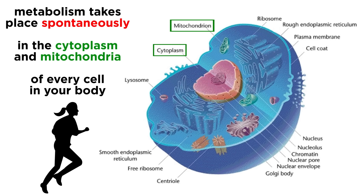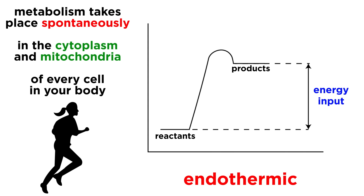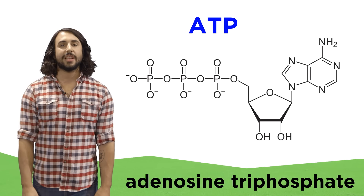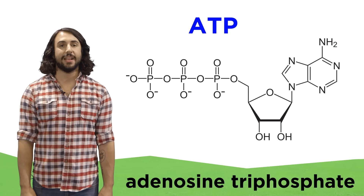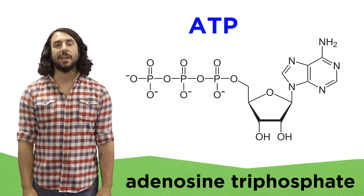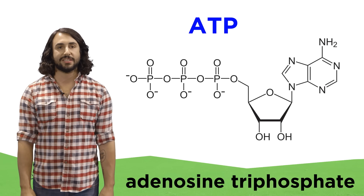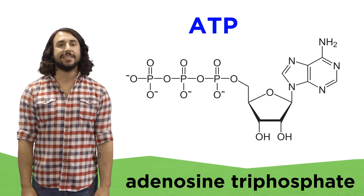Although these sets of metabolic pathways occur spontaneously in every cell in your body, some of the reactions involved are endothermic and require energy input to happen. The cellular currency of energy that will be used to facilitate such reactions is called adenosine triphosphate, or ATP.